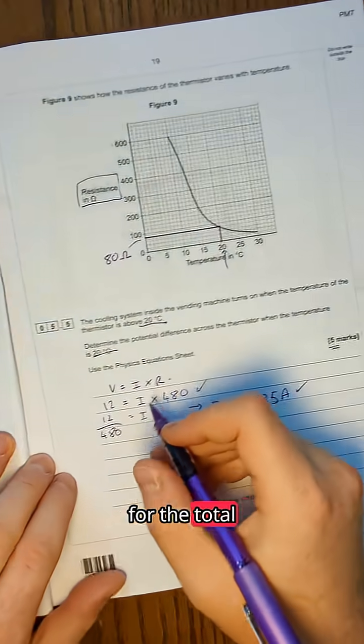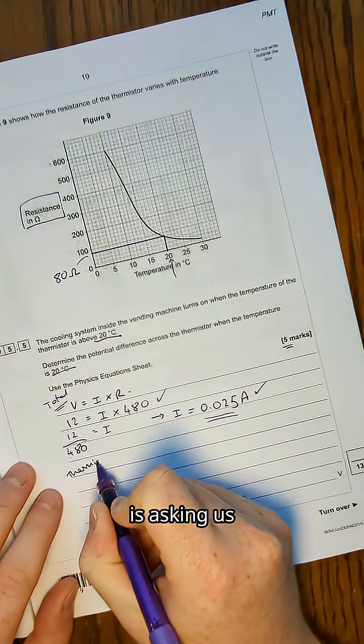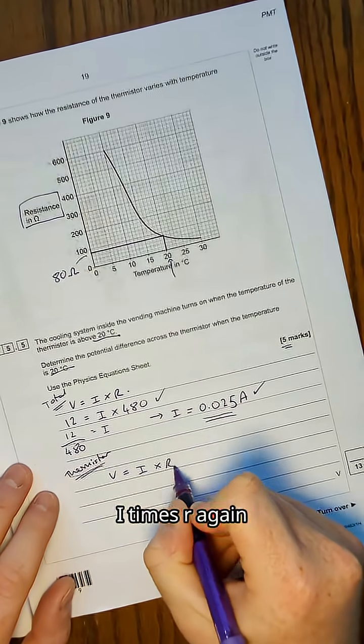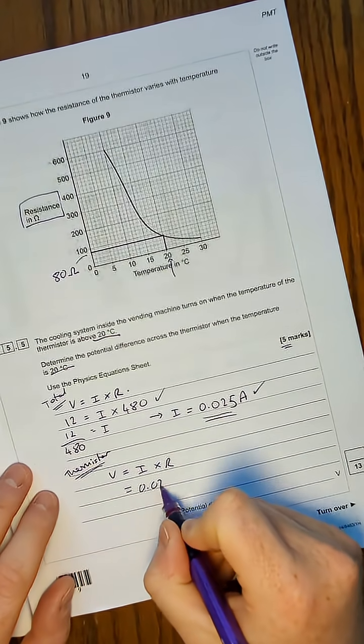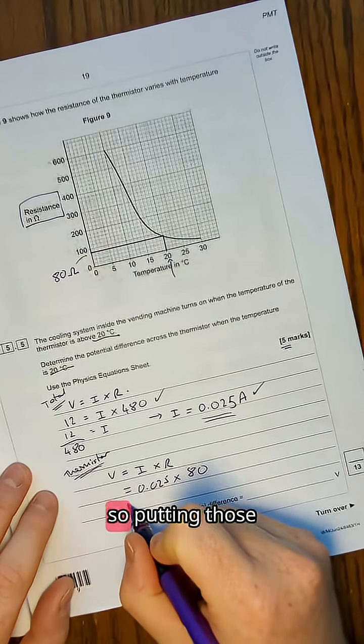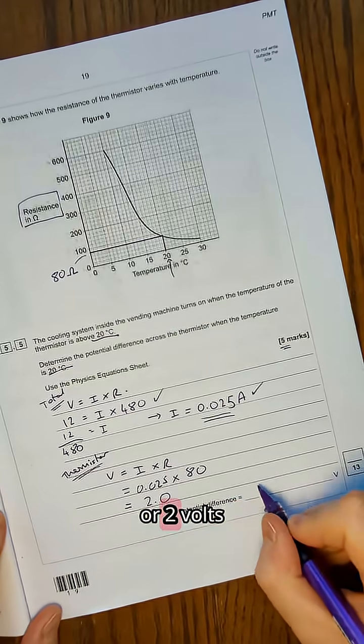So this was for the total. So I'm just going to write total here. This one now we're looking at just the thermistor, the thing it's asking us to look at. So I'm going to do V equals I times R again. This time the current I know, 0.025. And the resistance I know, which was 80 from the graph. So putting those values in, I get a value of 2.0 or 2 volts,